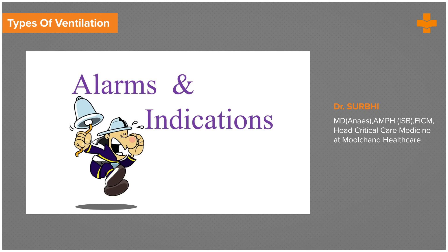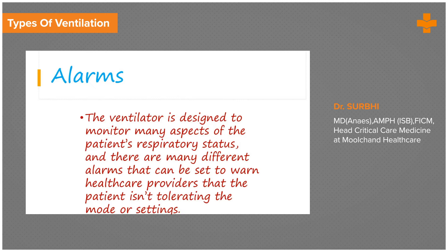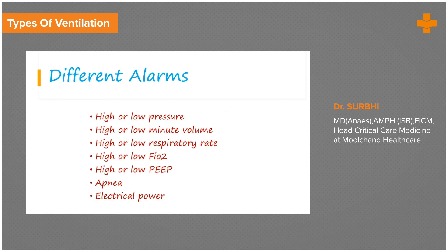Once ventilators are set up, you must know what the alarms are. The ventilator is designed to monitor many aspects of the patient's respiratory status and we need to set each and every alarm so we can be warned. When setting up modes and parameters, we often forget to set the alarms. As per the patient's settings, we need to set the alarm limits around 10 to 15 percent higher or lower than the upper and lower acceptable limits of the patient's values, so that we don't miss small changes.